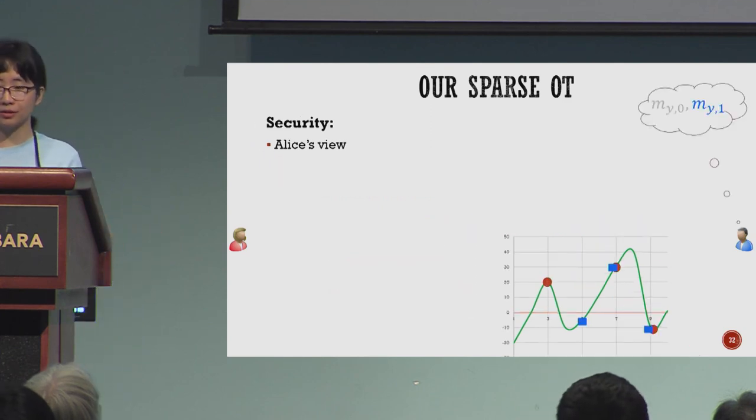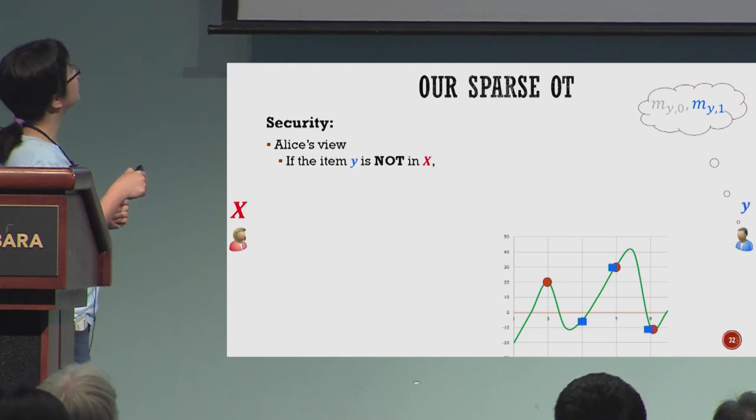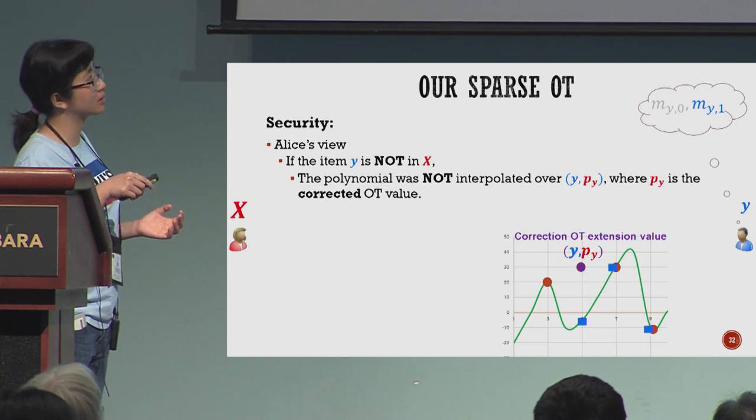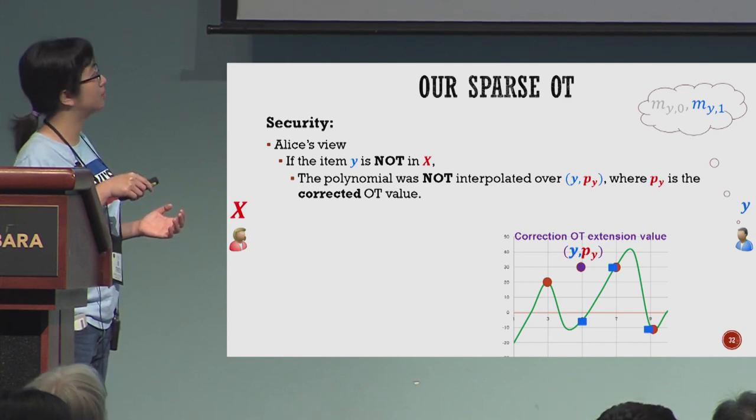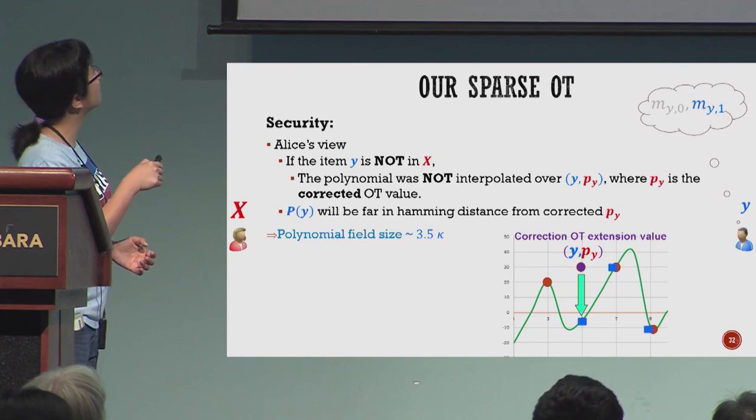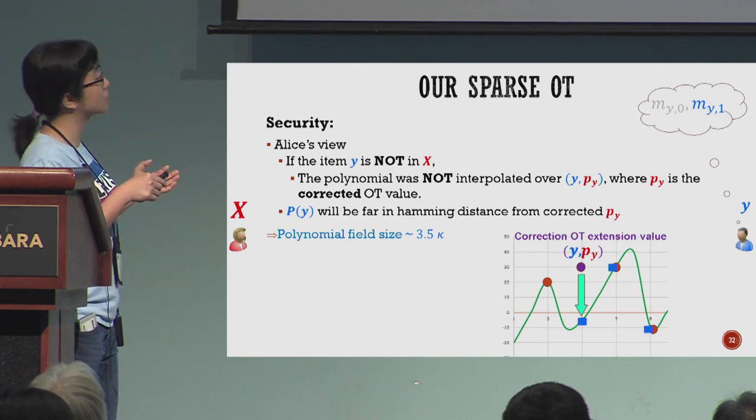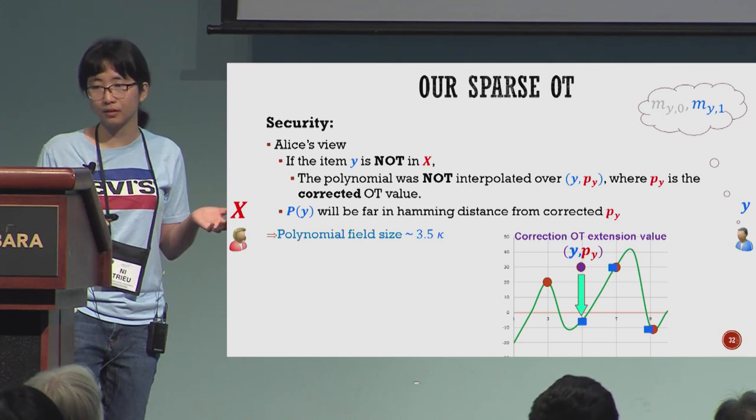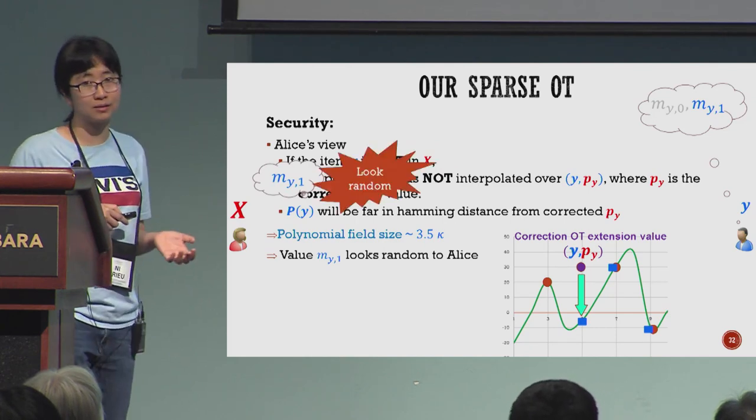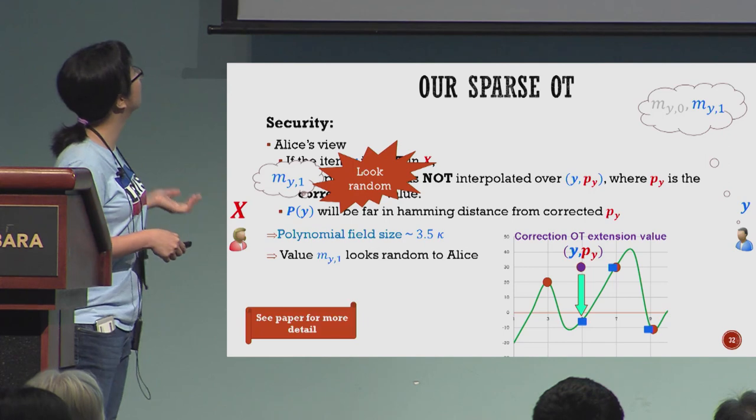For the view of Alice, if the item y isn't in her set, Alice never interpolates over this point. You can see y and Py, the correction OT value Py here, but the point she interpolates is something like here. We show that if capital P and small p are far in terms of Hamming distance, the field size should be around 3.5 times the security parameter. Now the OT message My1 looks random to Alice. The proof is a bit complicated, so see the paper for more details.